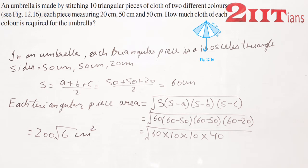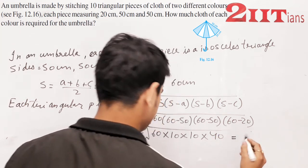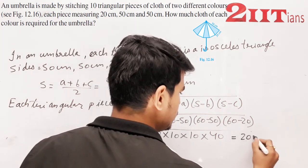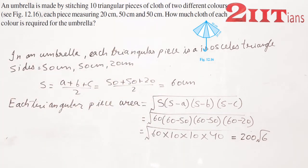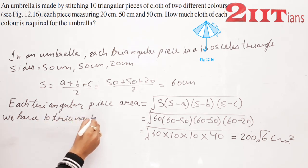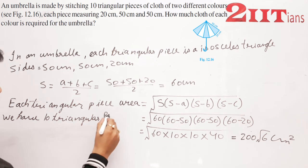इसके बाद, this is 200√6 cm². Now we have 10 triangular pieces.